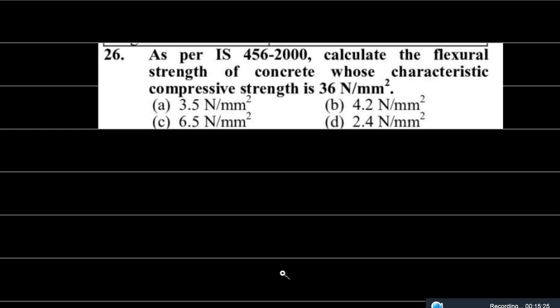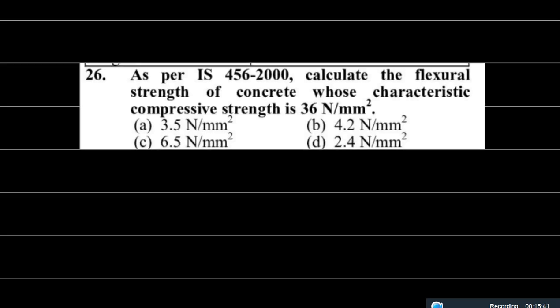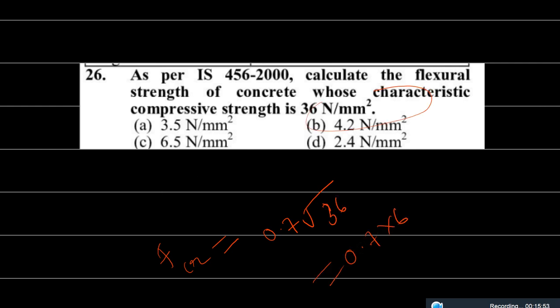The next question: as per IS-456-2000, calculate the flexural strength of concrete whose characteristic compressive strength is 36 N/mm². Using the formula 0.7√fck: √36 = 6, and 0.7 × 6 = 4.2 N/mm². Option B is correct.